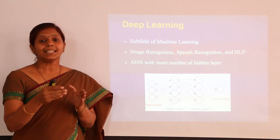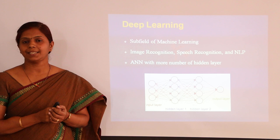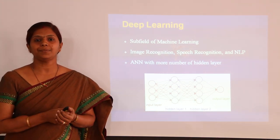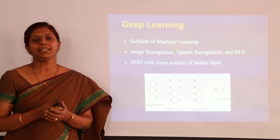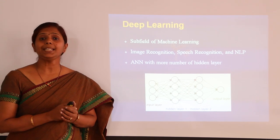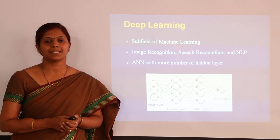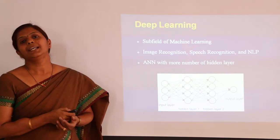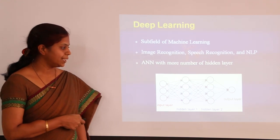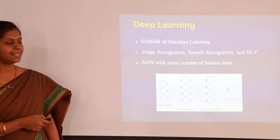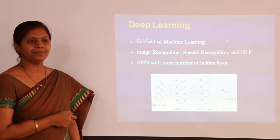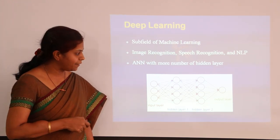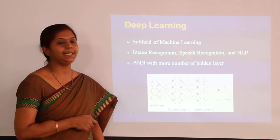The increased number of hidden layers contributes to better accuracy for the neural network on image datasets. The conceptual diagram of the deep learning model is shown here, where we can see the input layer, output layer, and a number of hidden layers.